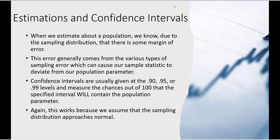When we estimate about a population, we know that due to the sampling distribution, there's some margin of error. This error generally comes from the various types of sampling error, which can cause our sample statistic to deviate from our population parameter. This can include non-response error, sampling frame error, coverage error, as well as any other errors that come into our measurement tools.